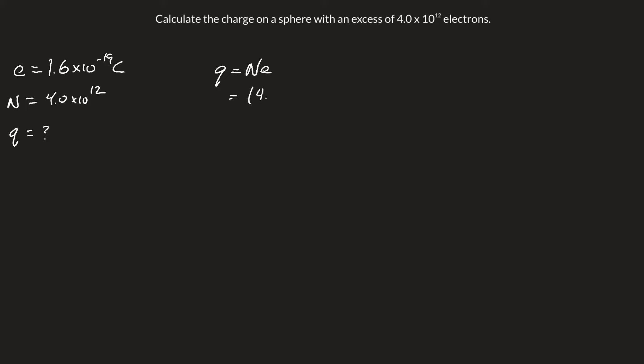N is 4.0 times 10 to the 12, and E is 1.6 times 10 to the negative 19 coulombs. This leads us to the final answer of 6.4 times 10 to the negative 7 coulombs.